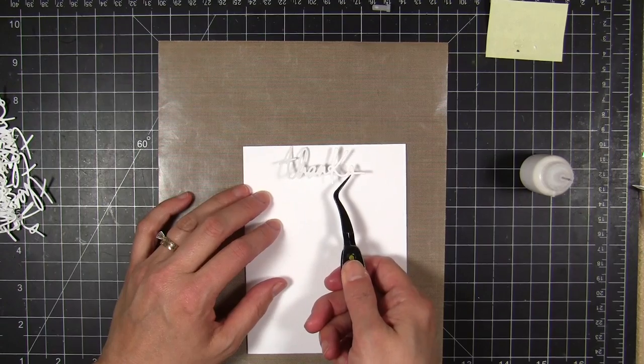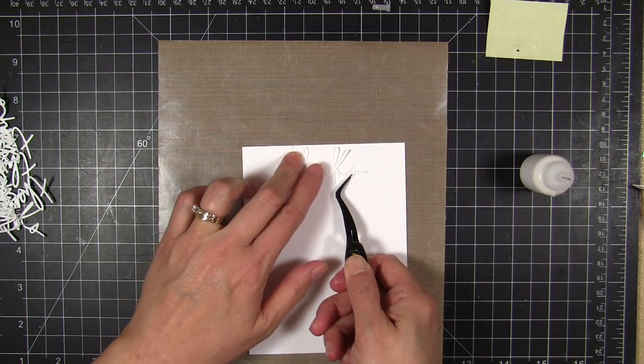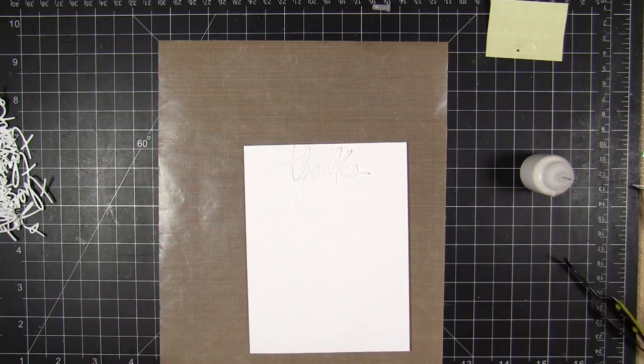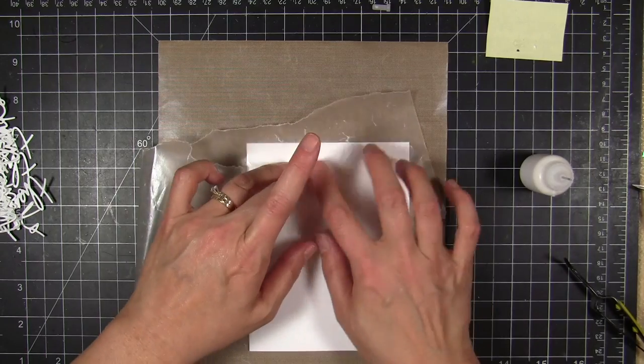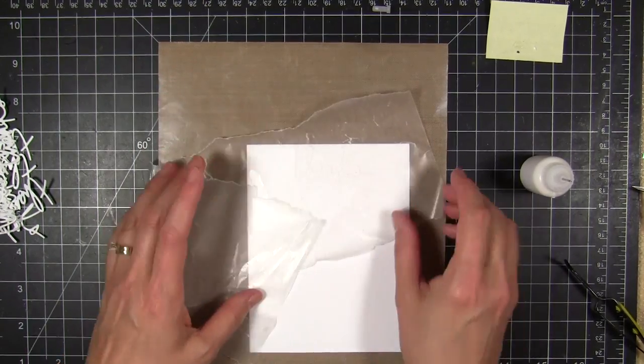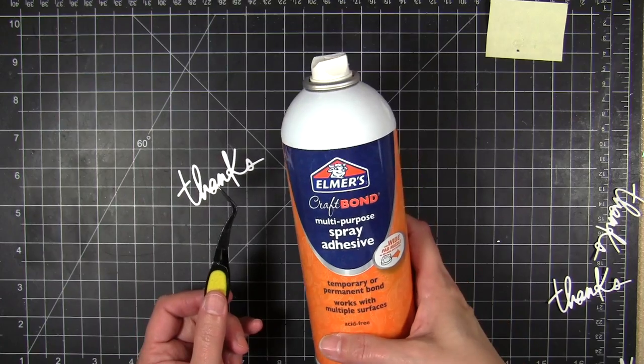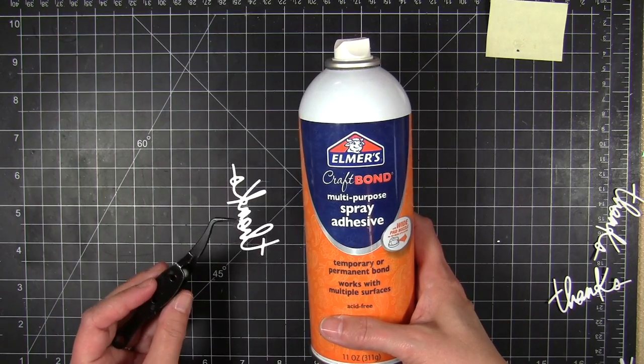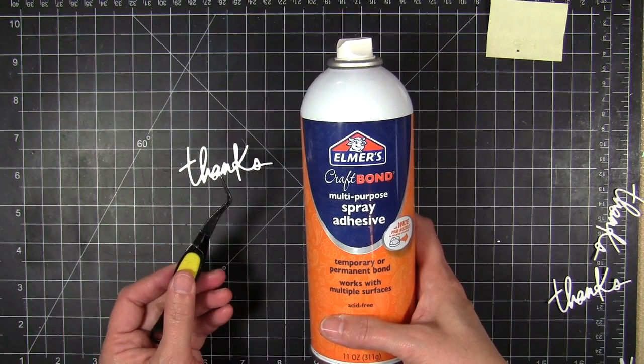And on my first card I started out like this. I grabbed my fine tip glue applicator bottle and I put little tiny dots of glue on the back of this whole thing and then I mounted it in place and took my wax paper. And then I realized as I was doing this that this was going to take me forever.